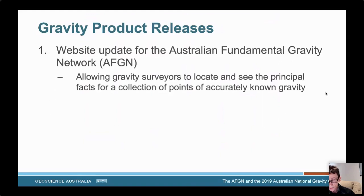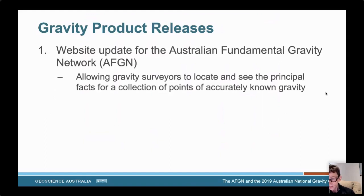The only people who will ever use the AFGN are those performing gravity surveys — a very small group — but without them and the AFGN, there would not be any gravity grids or any other gravity products. Today, we have released a new website for the AFGN that will allow gravity surveyors to more easily locate the nearest AFGN benchmark to their survey area and to get the principal facts for that benchmark. By taking a gravity reading at an AFGN survey benchmark as part of their survey, the gravity data can be adjusted in level to become consistent with all of the values within our national database.